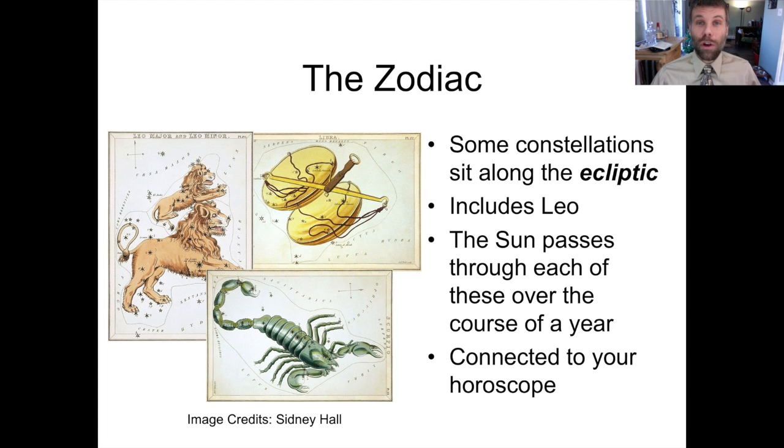The constellations of the Zodiac include familiar names like Leo, Libra, Sagittarius, Scorpius. All of these are constellations of the Zodiac along with a bunch of others. And if those names sound familiar, they should because they're connected to your horoscope. So if you go and read your horoscope in the paper, which no one does anymore, or get it through an email list or something, the sign that's associated with your birth is one of these constellations of the Zodiac. And that happens because the Sun moves through these constellations over the course of a year.